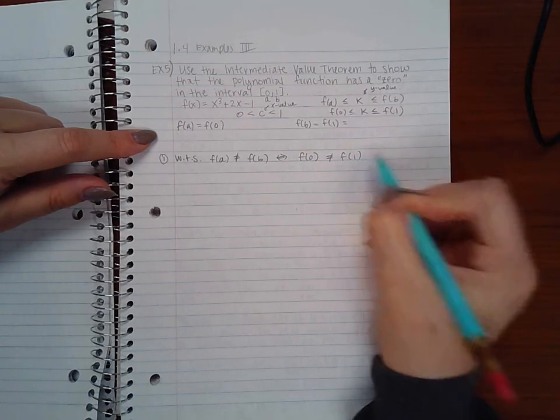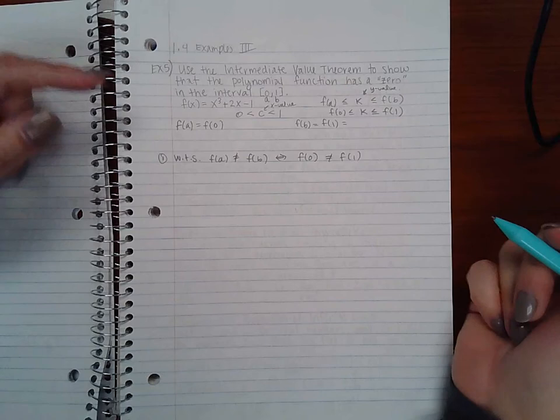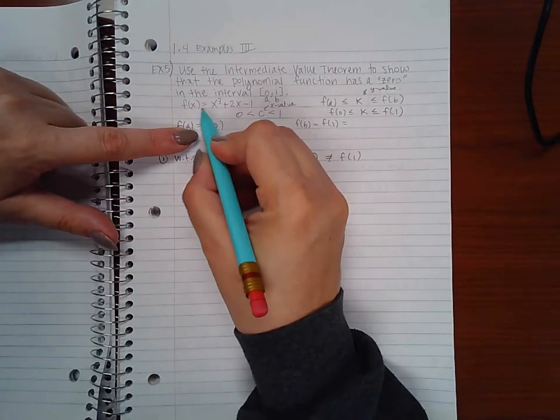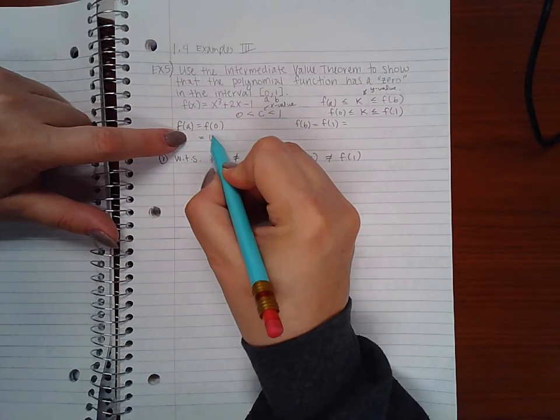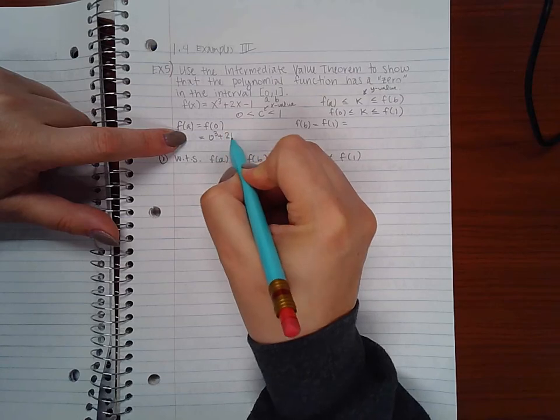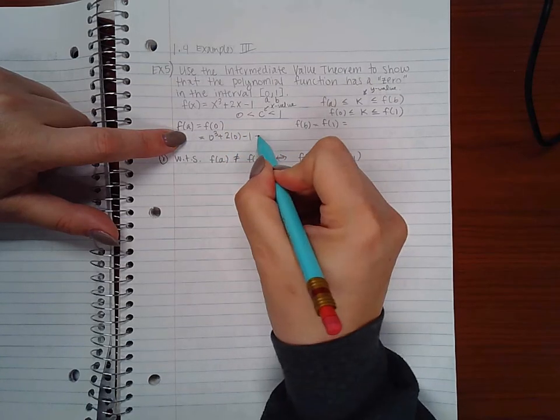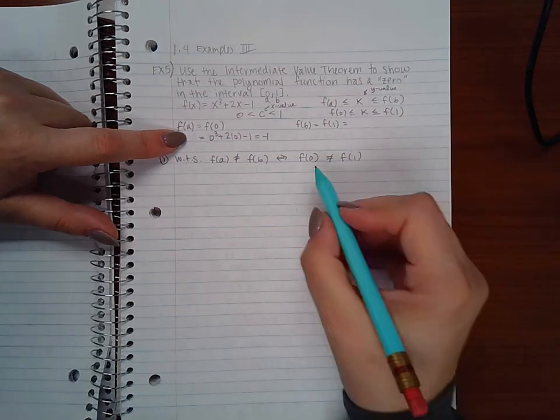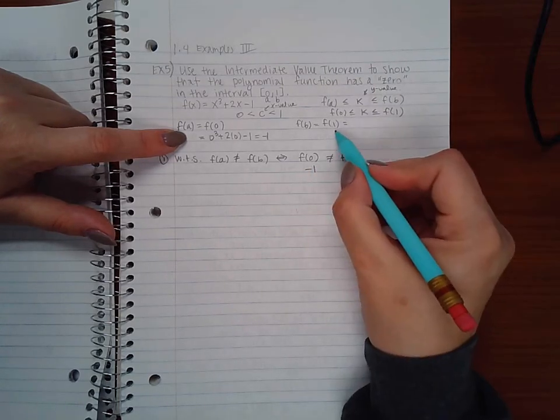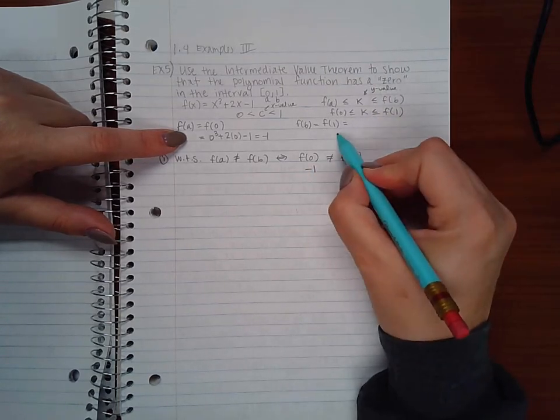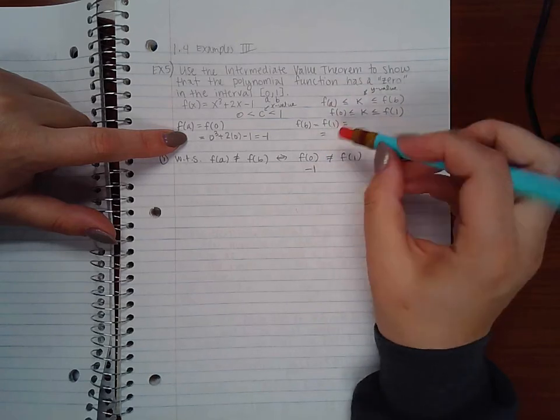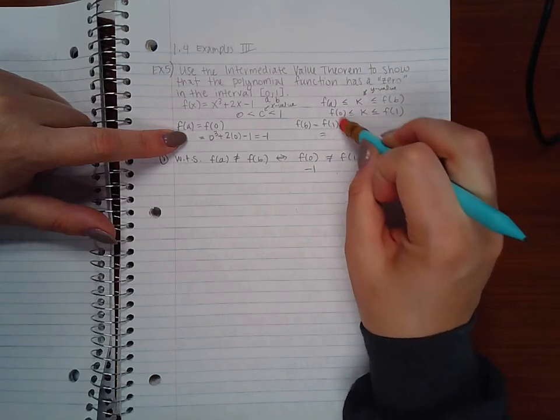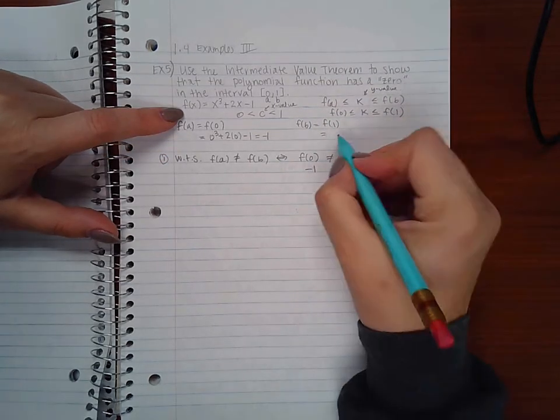Now let's go verify that. If I calculate f(0), this is my function here, which means I would be plugging in 0 for all of my x's, which would give me a negative 1.